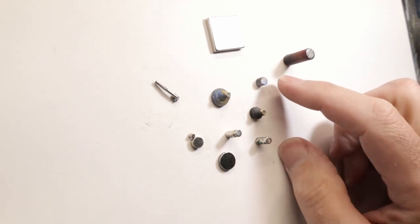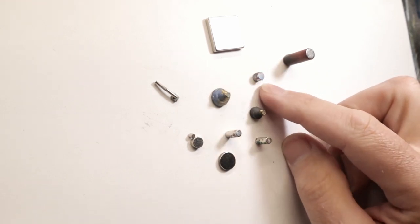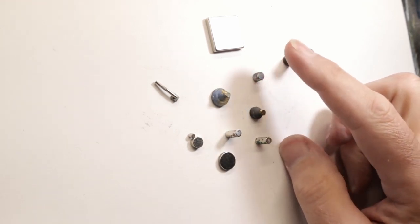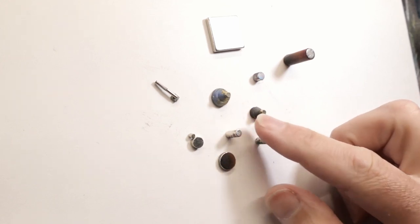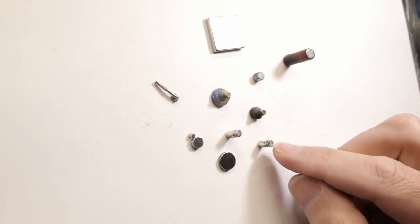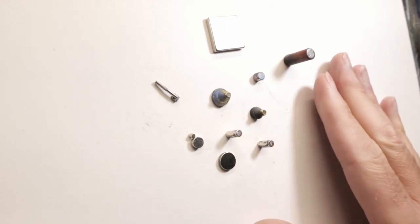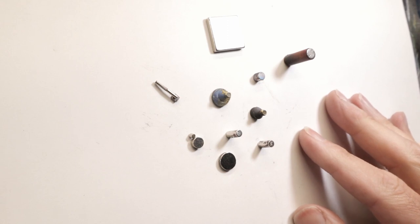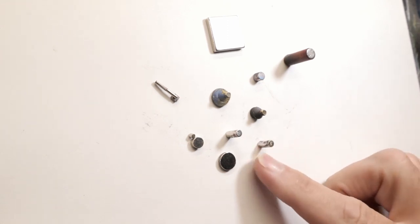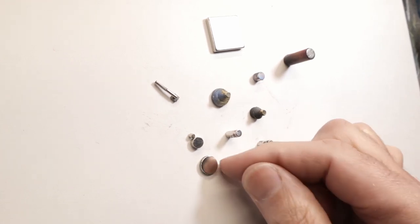Neodymium magnets come in basically four different strengths for general purpose, and they have numbers associated with them. So just remember that the higher the number, the stronger the magnet. So if you're using them for stencils like I do, save yourself the aggravation and just get the strongest ones you can. The four different grades are N40, N42, N45, and N52. So N52, like this guy right here, is the strongest one that you can pretty much get commercially.